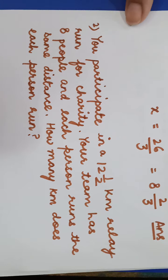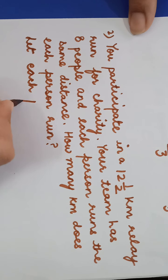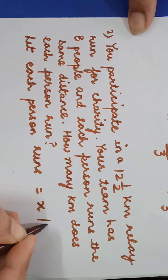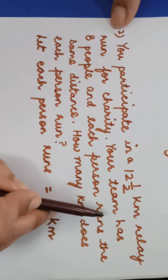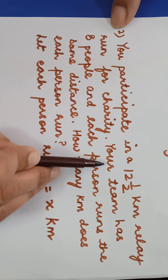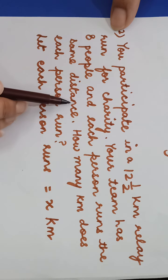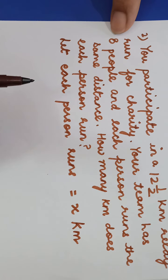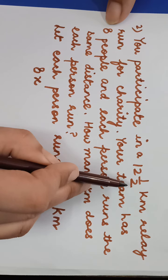We let each person run x kilometers. There are 8 people and all run the same distance, so 8 persons together cover 8x kilometers. This total distance equals 12 whole 1 upon 2 kilometers. So we frame the equation: 8x equals 12½.